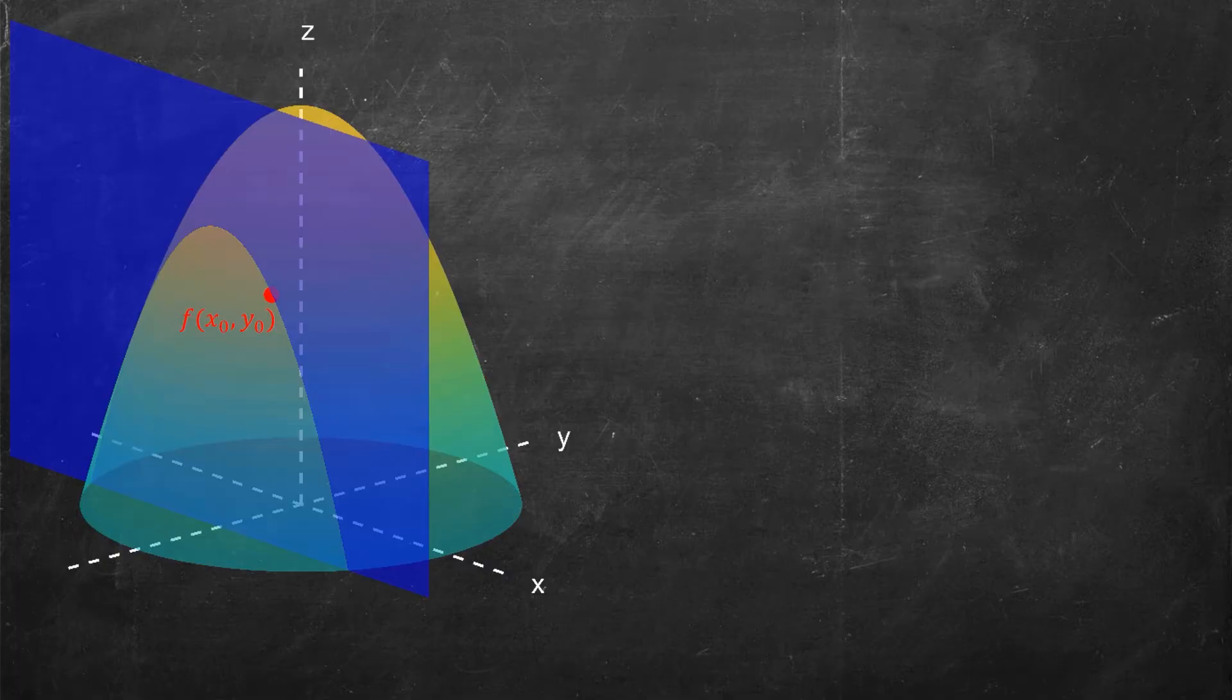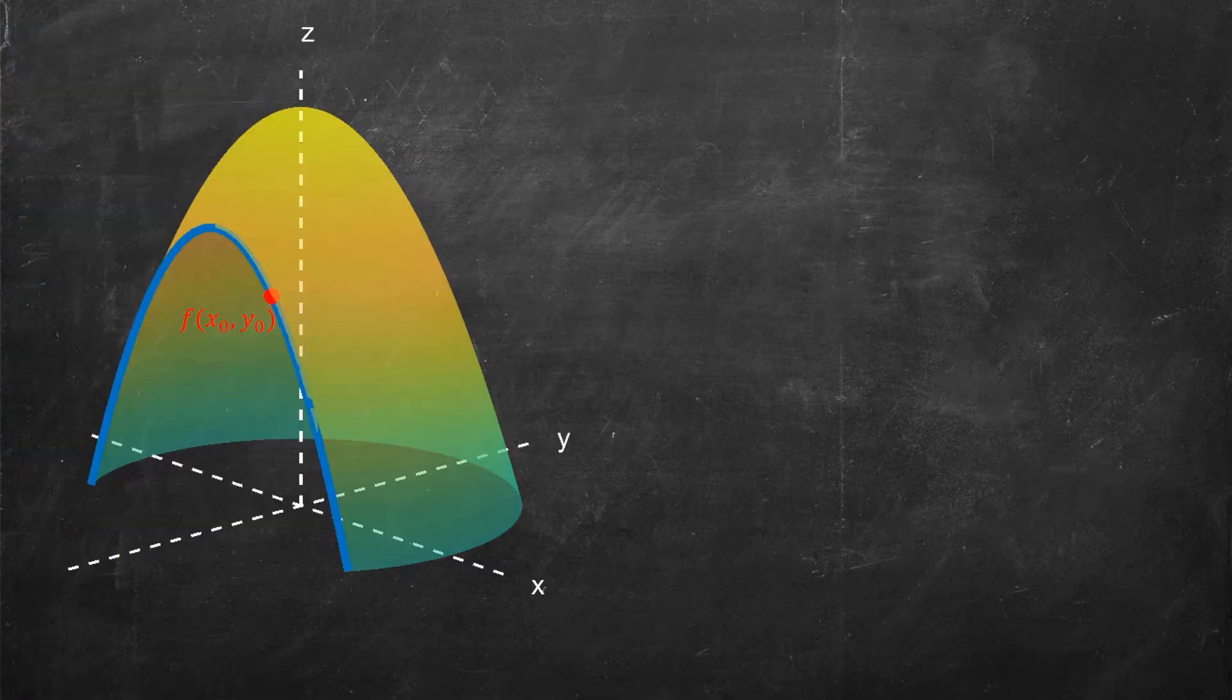When you take a surface and you intersect that with a plane, when you constrain it to be a specific y value, then when I cut away at that particular point, what I get is a one-dimensional function. This is a function f(x, y₀). It looks a little bit like a downward facing parabola here.